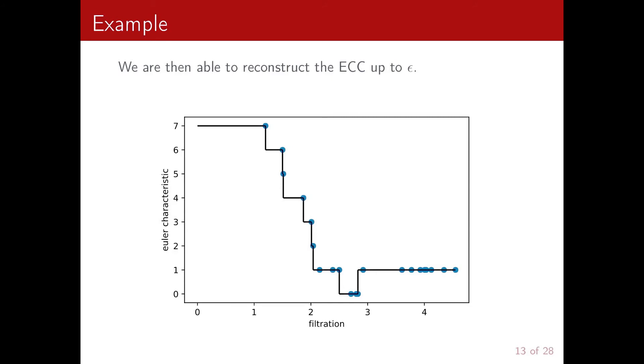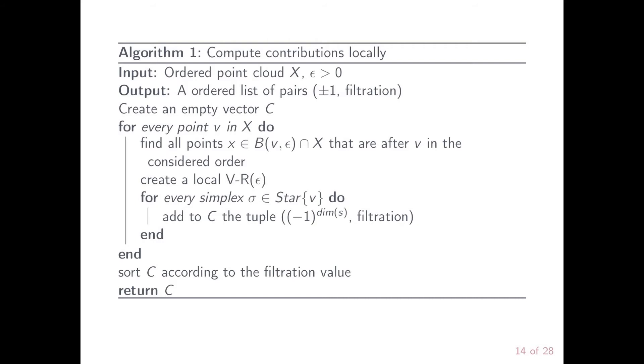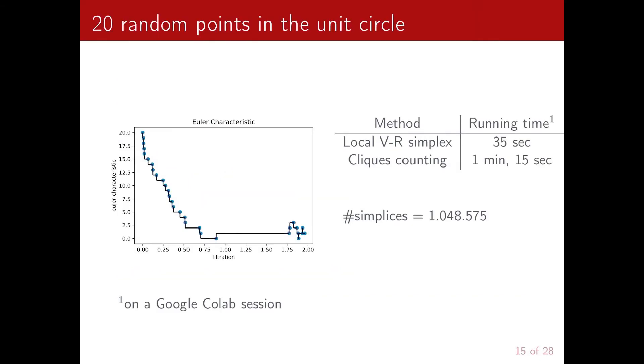So this is the algorithm that I just explained to you with an example. So we take as input an ordered point cloud and a positive value epsilon. And we output an ordered list of pairs with the first number being plus or minus one and then the corresponding filtration value.